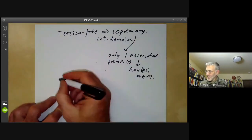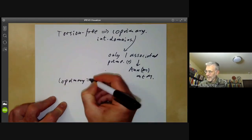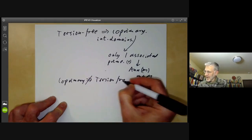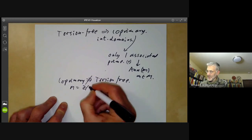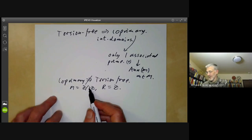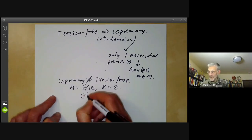So torsion-free implies co-primary over integral domains. Co-primary does not imply torsion-free. This is very easy. We can just take the module M to be Z modulo 2Z and the ring R to be the integers Z. This obviously isn't torsion-free and it obviously is co-primary because the only associated prime is two.